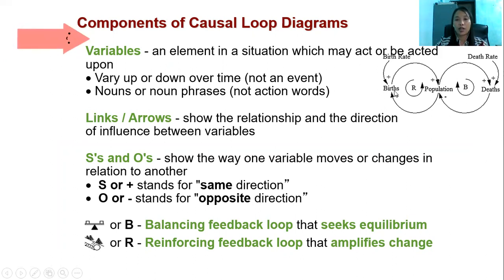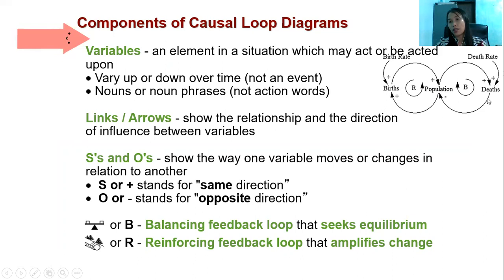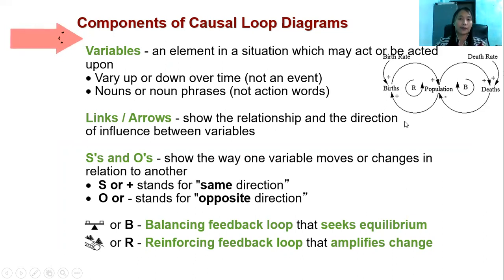If birth influences population and leads to an increase, we indicate this with a positive polarity. If death influences population and leads to a decrease in population, we indicate that with a negative polarity.